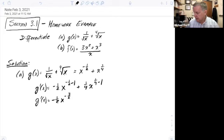plus 1 fourth x. And then I have 1 fourth minus 1, and that's going to be minus 3 fourths. And that's my answer.